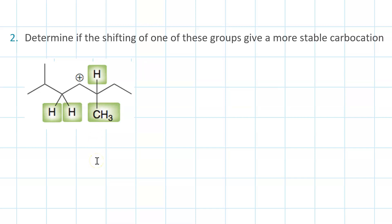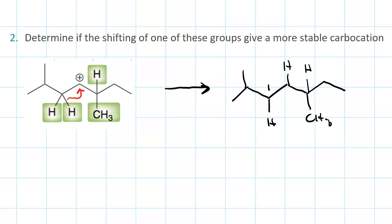Will doing any of these get us from secondary to tertiary? Let's try. What if we did a hydride shift from the left-hand carbon? This would put our carbocation here, which would still be secondary. So there's no benefit to that — it's not going to happen. There's no driving force in increased stability.